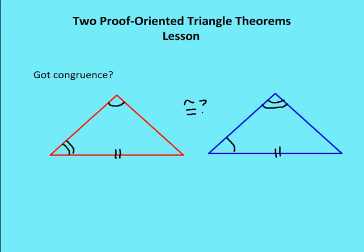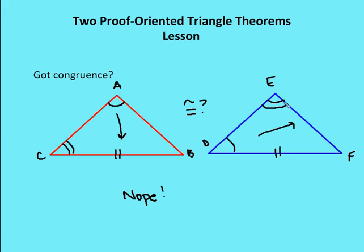Next question: are these two triangles congruent? The answer is no. Here's a trick for understanding angle-angle-side congruence: look at the angles that are congruent — say A, B, C and D, E, F, where angle A is congruent to angle D and angle C is congruent to angle E. If I have angle-angle-side, the side opposite angle A is CB, and the side opposite the congruent angle D is EF. But EF is not indicated to be congruent to CB, so these two triangles are not congruent by angle-angle-side.